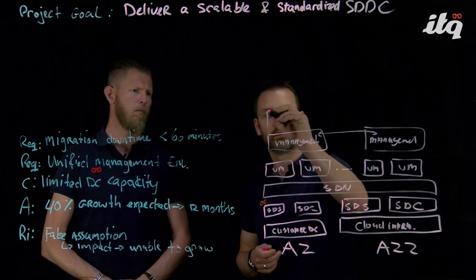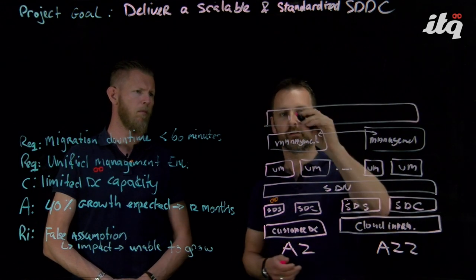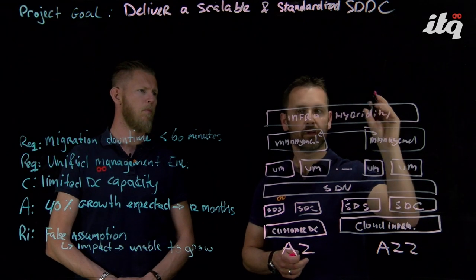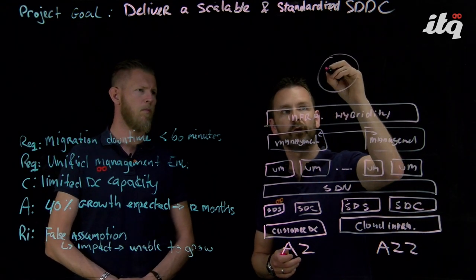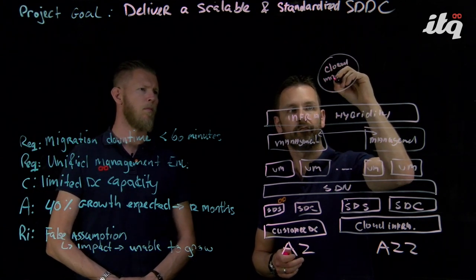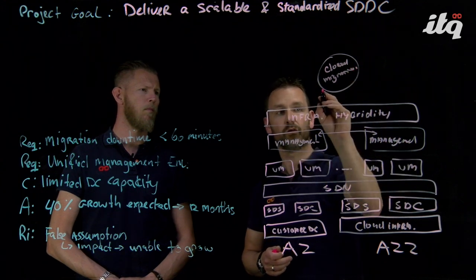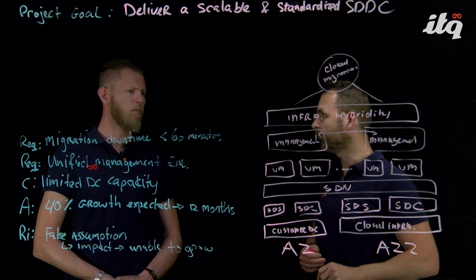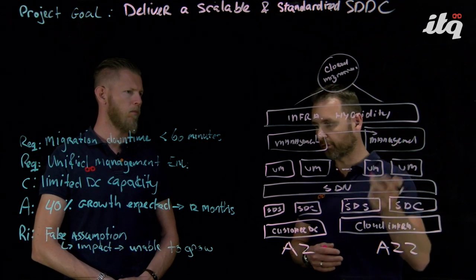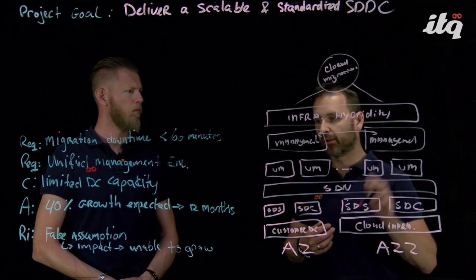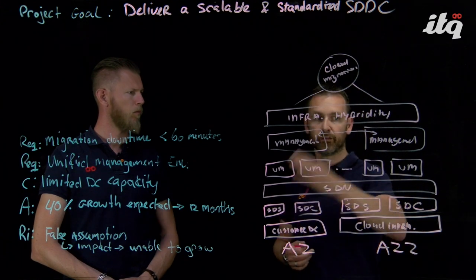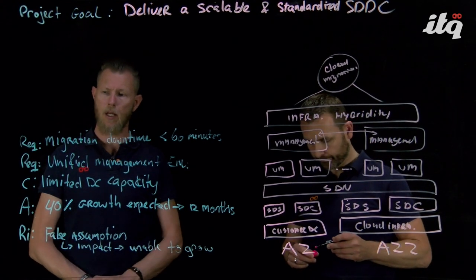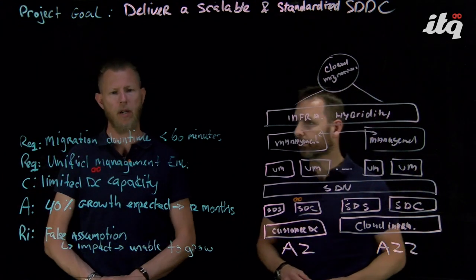What we need is a solution that creates an abstraction layer across these two infrastructures — we're going to call that infrastructure hybridity. We're going to deliver a cloud migration solution that links this side to your cloud infrastructure, enabling bulk migration of all workloads. The migration happens in the background, and you decide on the cutover moment during a service window. Given that all the data is already replicated, the failover will be within a minute or so. That gives us a perfect answer to the first requirement: migration downtime of less than 60 minutes.